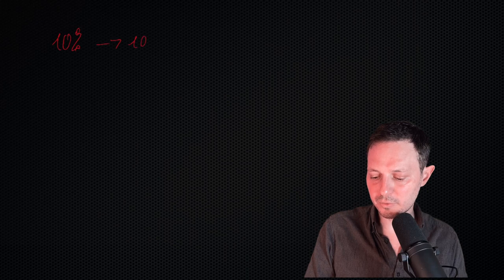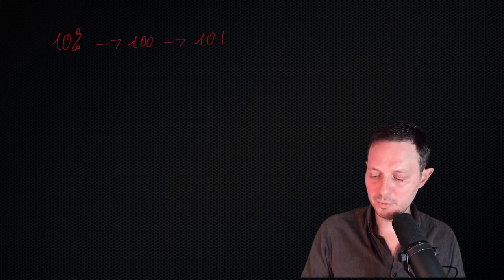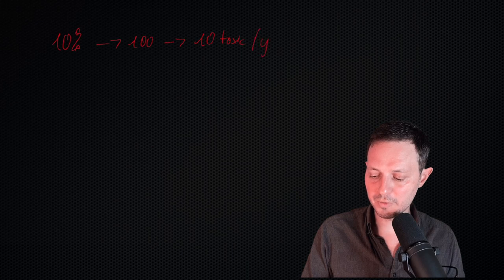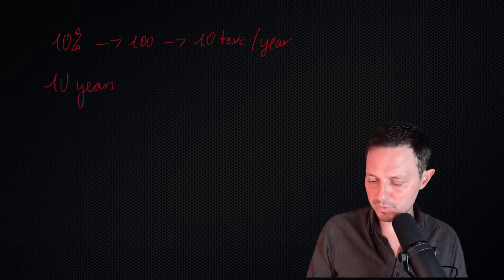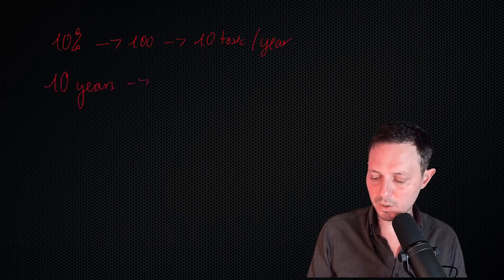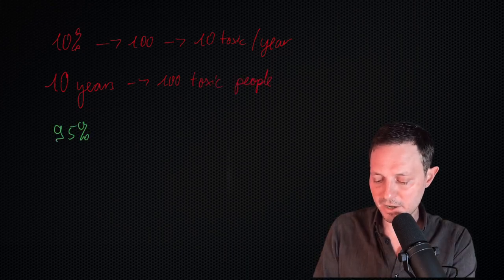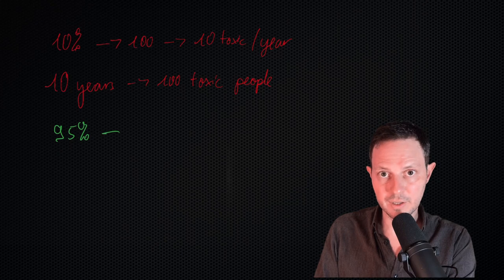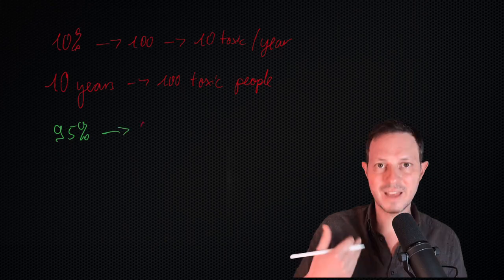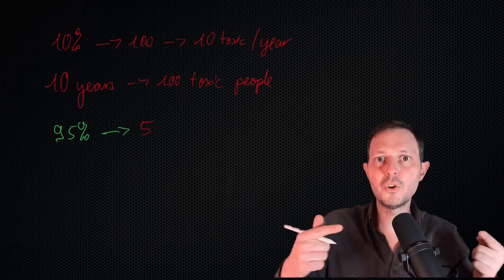Now, let's put this into context. Let's say that we do indeed have 10% of the population that is toxic. Let's say that on average, you meet 100 people per year. In other words, you meet 10 toxic people every single year. So, over the course of 10 years, that means that you have been meeting 100 toxic people in total. Let's say that you have a 95% success rate keeping the toxic people out. That still lets five toxic people go through your boundaries.